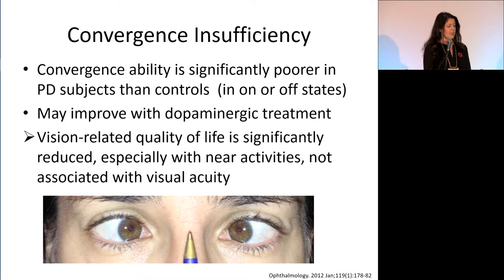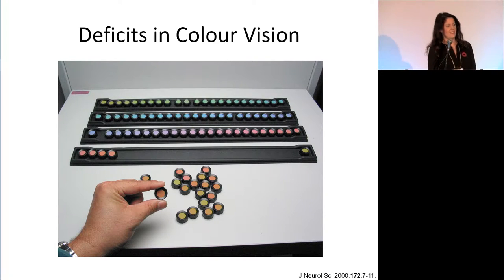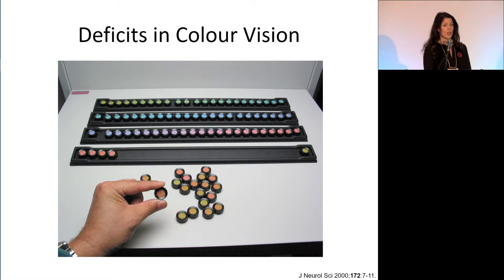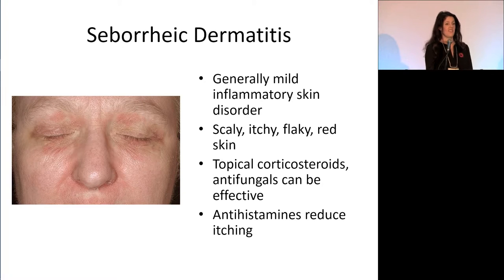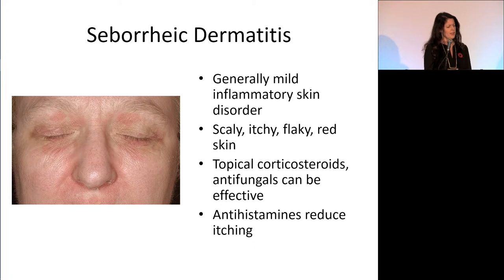Convergence insufficiency — the ability to look at near objects — is significantly poorer in PD patients and seems to improve slightly with Parkinson's medication, but causes problems with reading for some patients. Impaired color vision is seen more in research settings — there's a task where you line up colors in gradation and people with PD are worse at it. This is used as a research tool to predict and follow PD progression. Seborrheic blepharitis — part of seborrheic dermatitis — is a mild inflammatory skin disorder with scaly, itchy, flaky, red skin, and can be treated with topical corticosteroids, antifungals, or antihistamines.